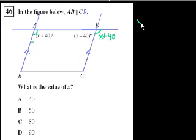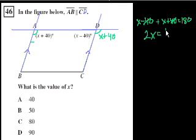So let's figure it out. x minus 40 plus x plus 40 is equal to 180. The 40s cancel out, so you're left with 2x is equal to 180. x is equal to 90. So it's D.